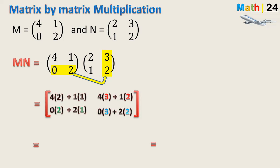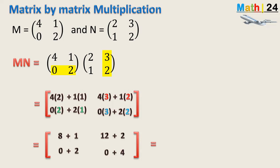Simplifying: 4×2 is 8, plus 1×1 is 1, giving 9. Then 4×3 is 12, plus 1×2 is 2, giving 14. Then 0+2 gives 2, and 0+4 gives 4. So the final answer for MN is the matrix: 9, 14, 2, 4.